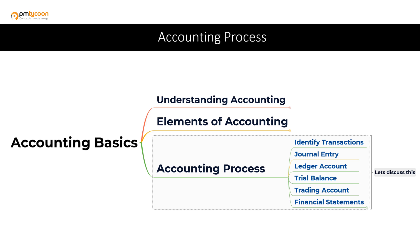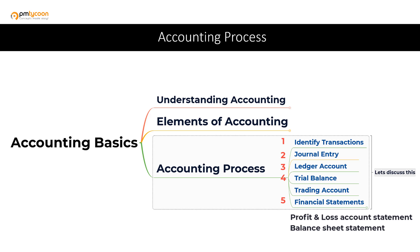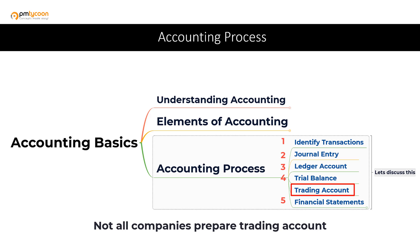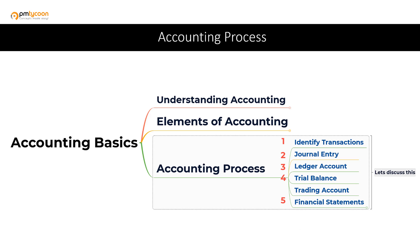Let's get started with the accounting process. The accounting process can be summed up into five simple steps in the following order: step one, identify transactions; step two, do a journal entry; step three, prepare a ledger account; step four, prepare a trial balance; and step five, prepare the financial statements like profit and loss account, balance sheet, and statement of cash flow. Not all companies prepare a trading account, but I have included it here to explain it.